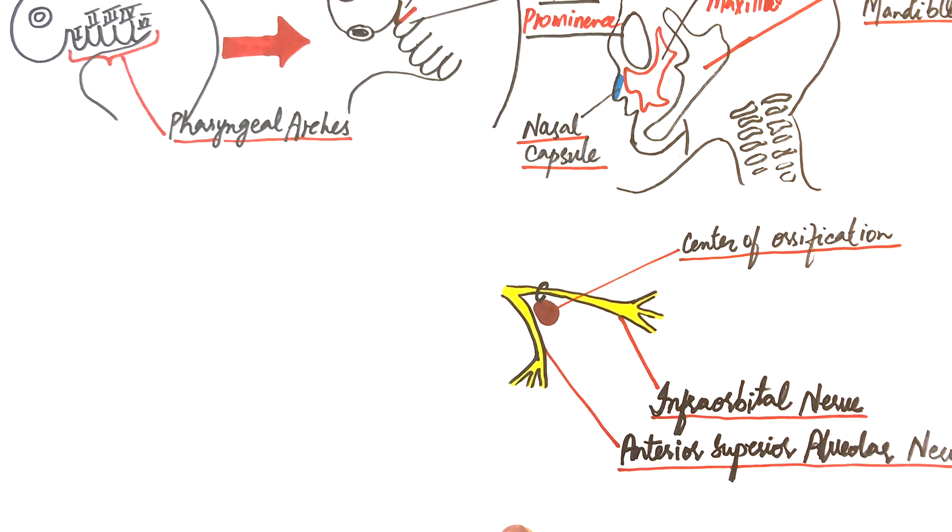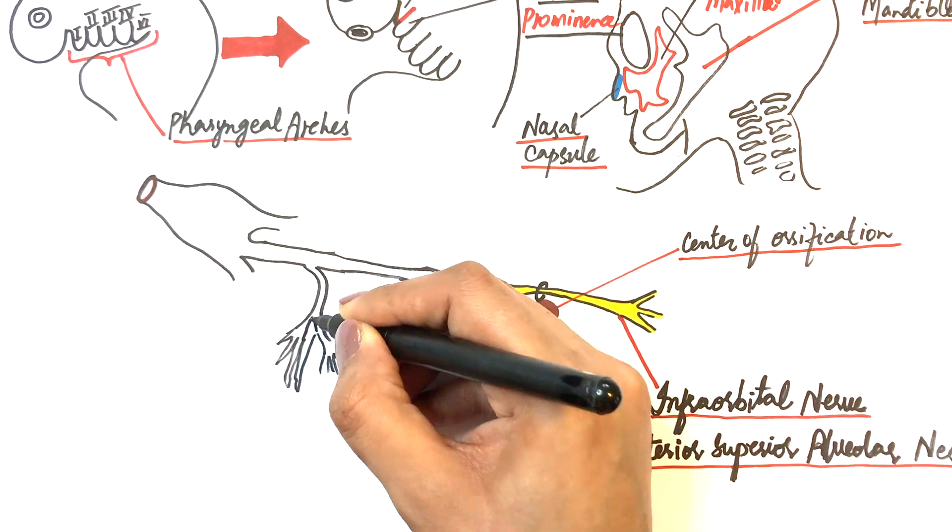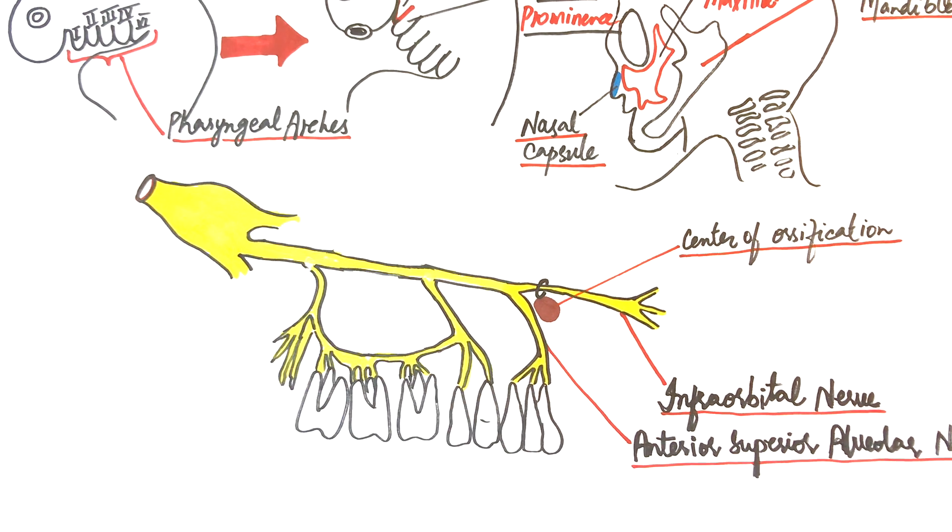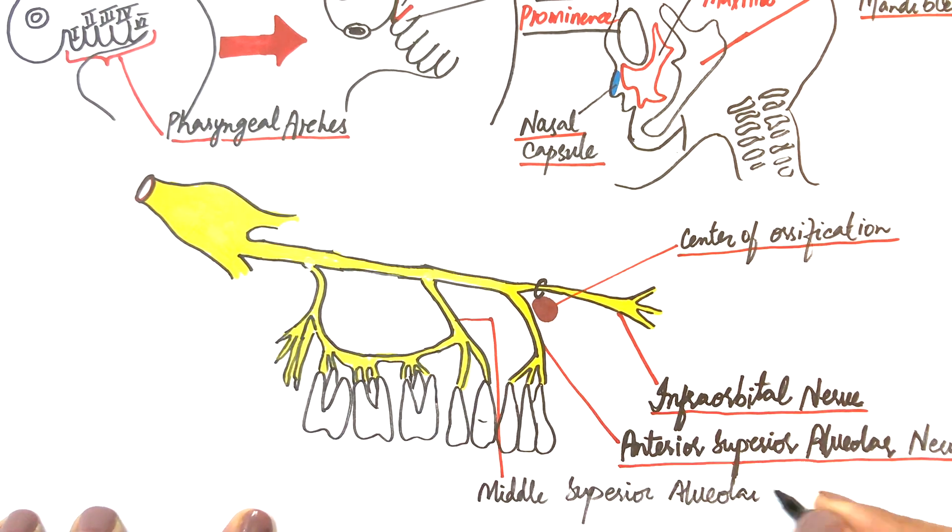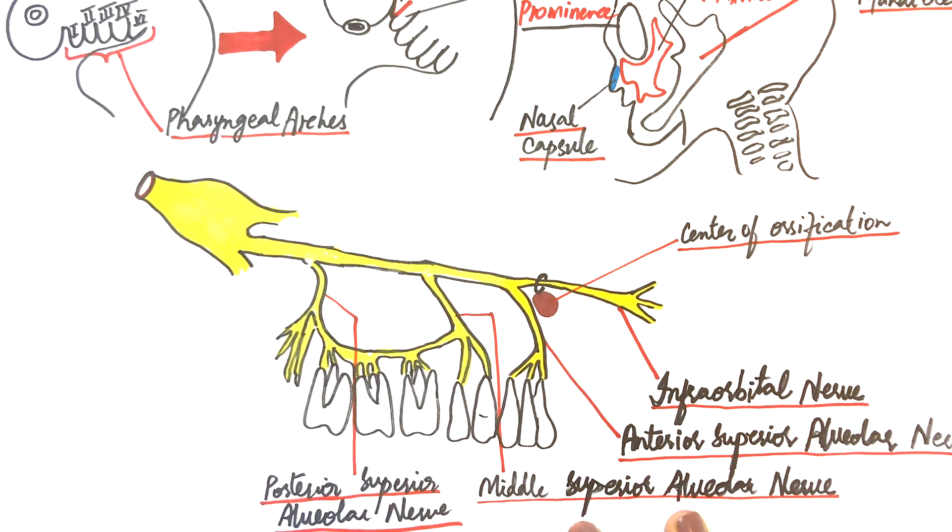Both of these nerves are divisions of maxillary branch of fifth cranial nerve or trigeminal nerve. The maxillary teeth are innervated by three superior alveolar nerve branches: the anterior superior, the middle superior, and the posterior superior alveolar nerves. From the center of ossification, the bone formation spreads in so many directions to form the complex bone of maxilla.